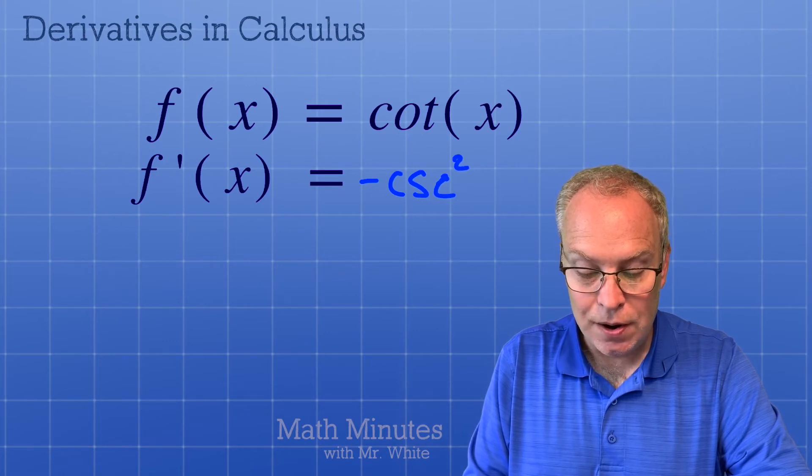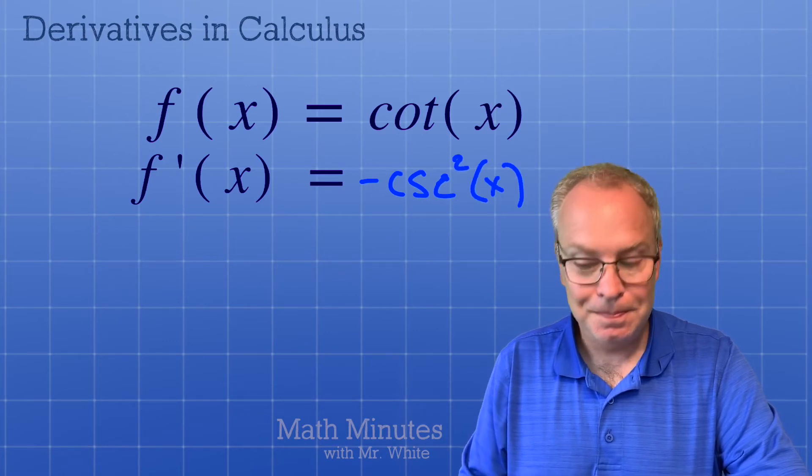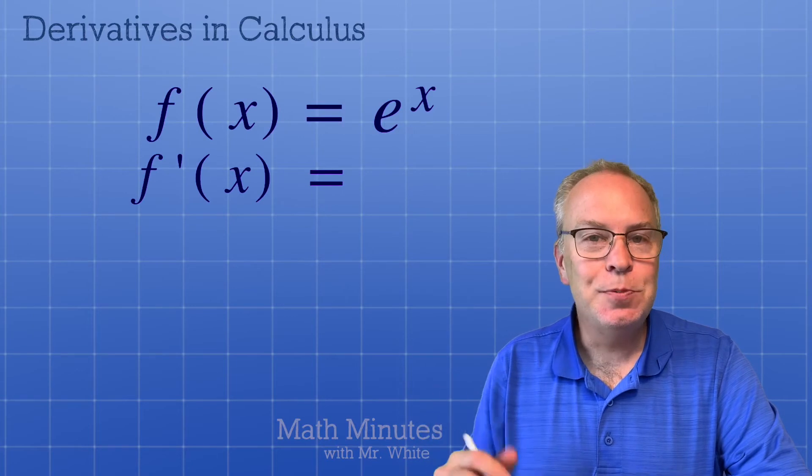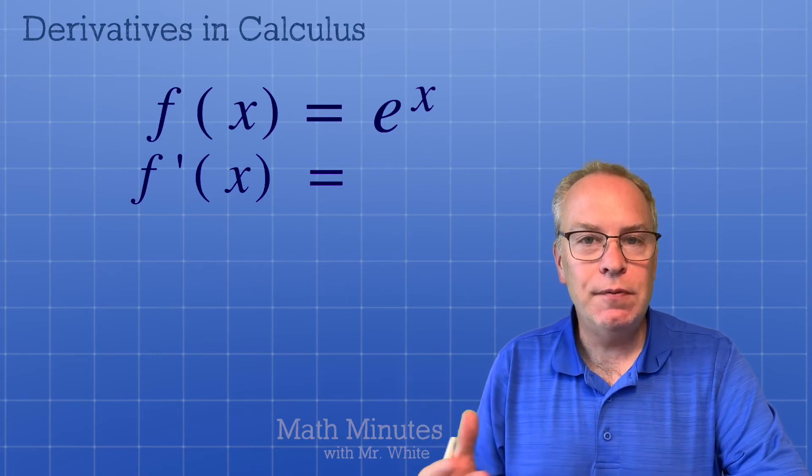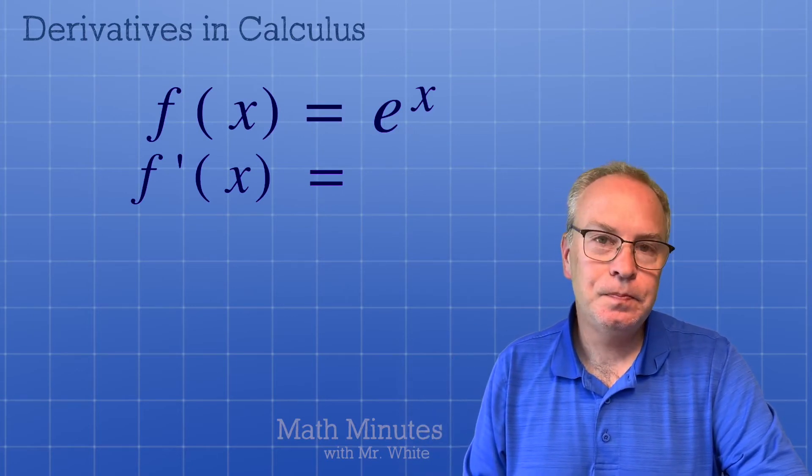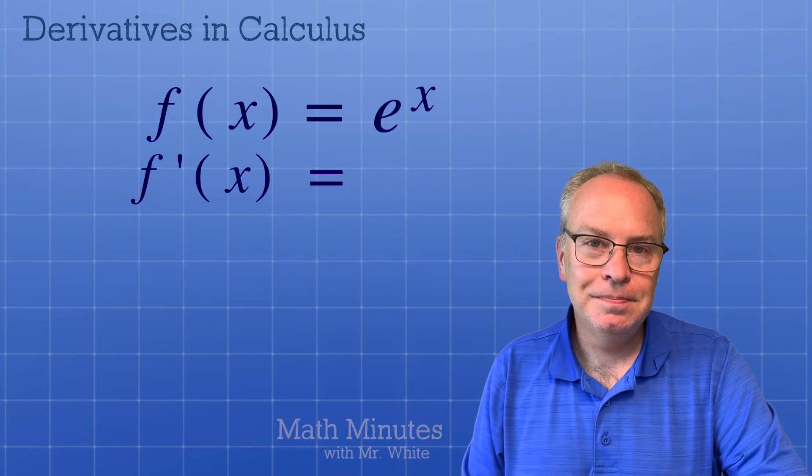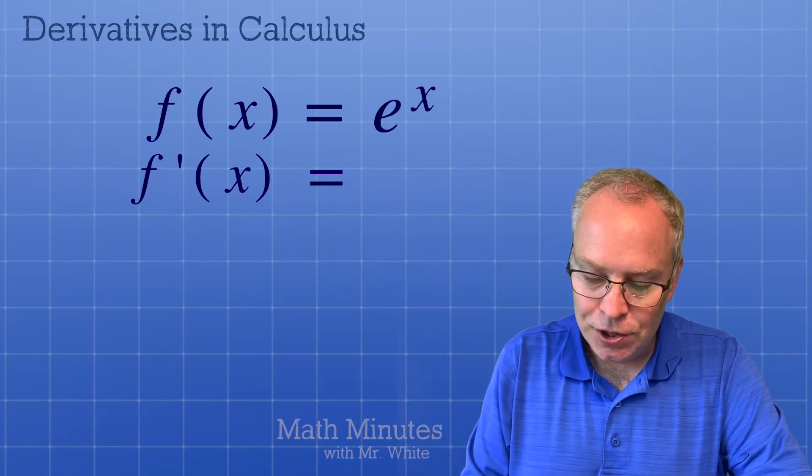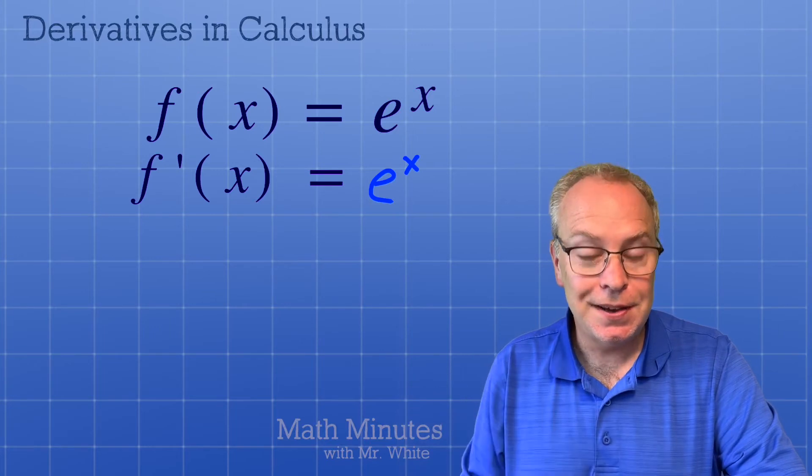Negative cosecant squared of x. Let's move on to exponentials. What's the derivative of e to the x? No chain there, so this is real simple. The derivative is still e to the x.